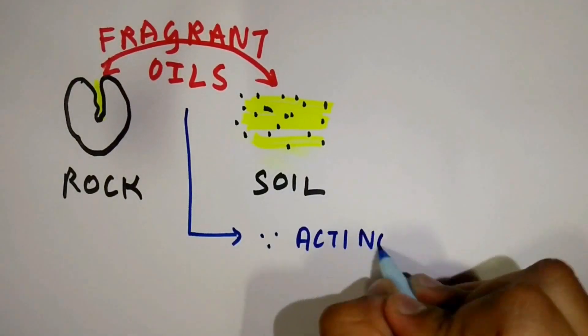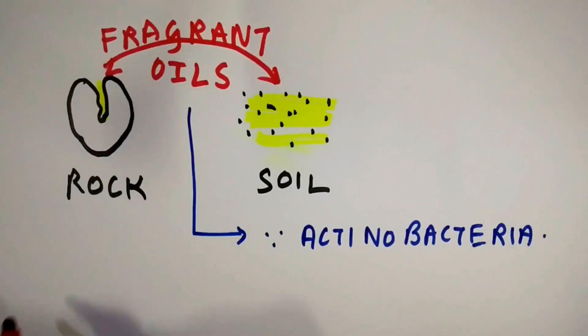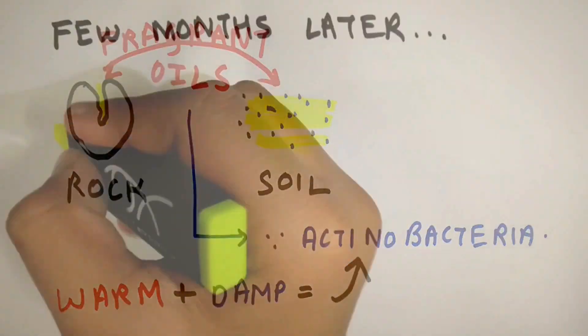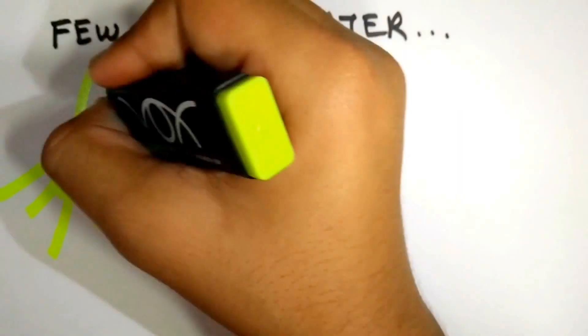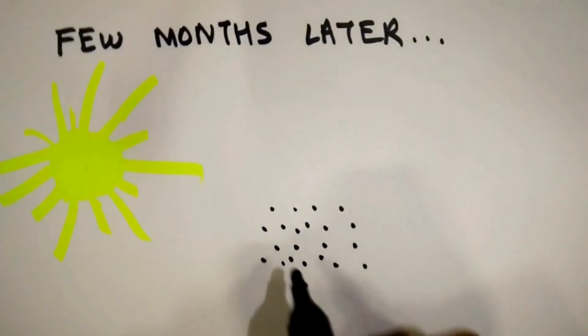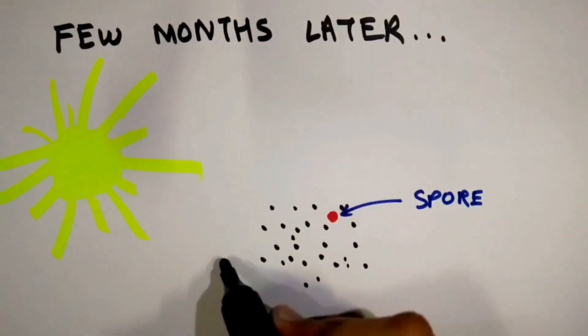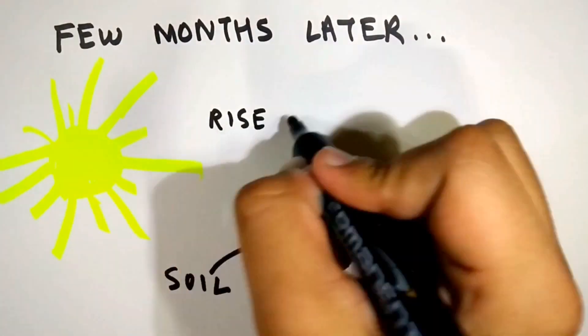These fragrant oils are caused by bacteria called actinobacteria. These bacteria develop during warm and relatively damp conditions. Later, when the climate is dry in summer, the bacteria produce spores in the rocks and soil.